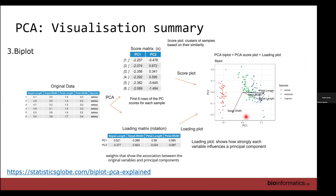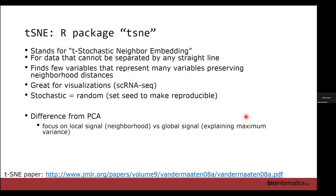To recap: we've looked at what PCA does, how to run it in R with prcomp, and three ways to visualize it. Next, we're going to move on to other methods of dimensionality reduction: t-SNE and UMAP. Both t-SNE and UMAP are methods for non-linear dimensionality reduction.